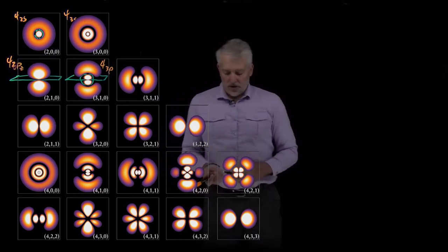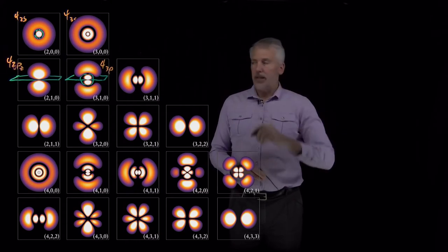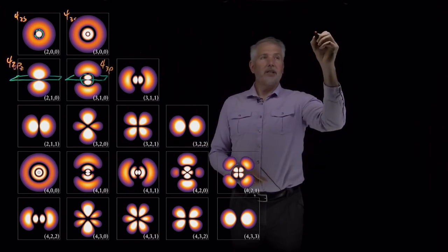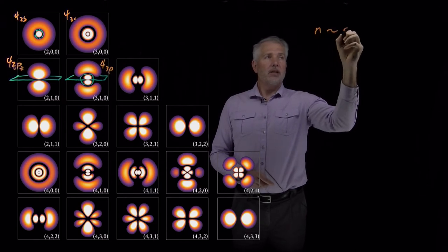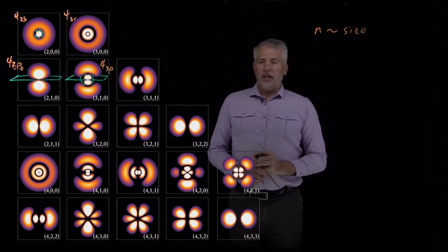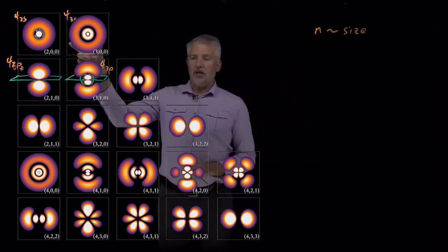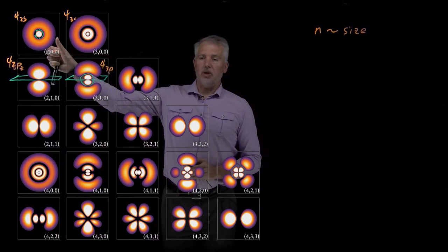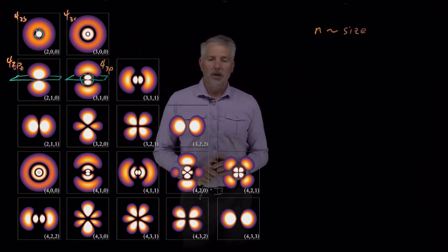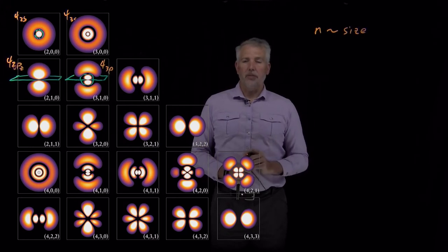So just to summarize the properties of these different quantum numbers and how they affect the shapes of these orbitals and their size, one thing that the n quantum number tells us is the size of the wave function. So as you can see, the 3s wave function is a little bit larger than the 2s wave function, which is not a surprise. Atoms get larger as they move down the rows of the periodic table because they occupy larger principal quantum number orbitals.